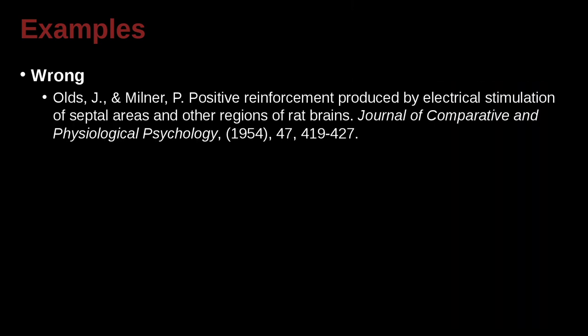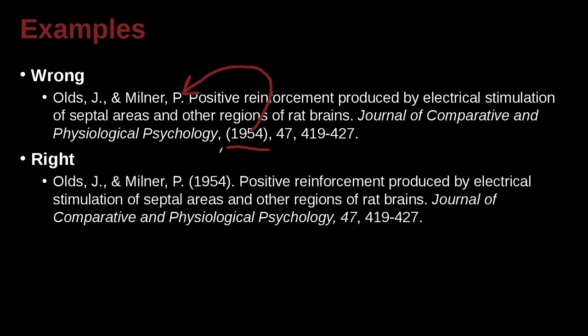Let's take a look at another one. Olds J and Milner P, positive reinforcement. Right away we see there's a problem. We've got the year way down at the end when we know that the year should be up after the authors. So the correct way to write that is with the year in parentheses after the authors. Also pay attention — we've got that ampersand there. Remember the ampersand.